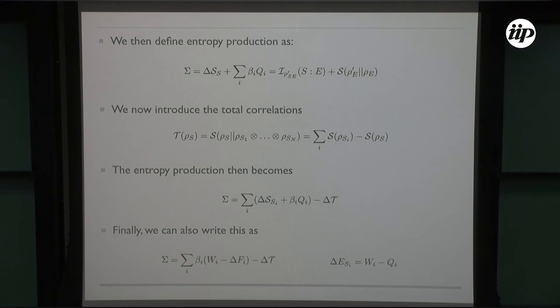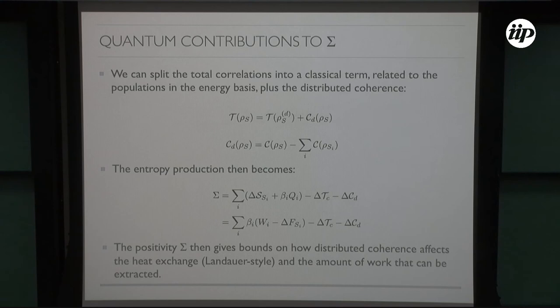You get that the entropy production is a sum of completely local and textbook thermodynamic terms minus the change in total correlations. You can similarly recast this if you just use the first law and define work in this way. You can write the entropy production being a sum of local terms minus the total correlations.